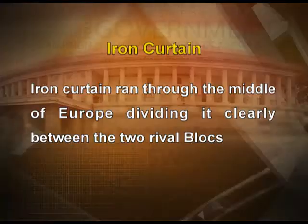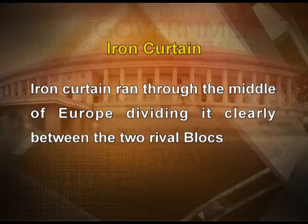NATO members on the west stood in contrast to those on the east, who were bound together by the Warsaw Pact — called the eastern block. Europe became the main arena of conflict between the two superpowers, and this divide appeared on the geography of Europe itself. The division between east and west Europe is called the Iron Curtain, which ran through the middle of Europe.